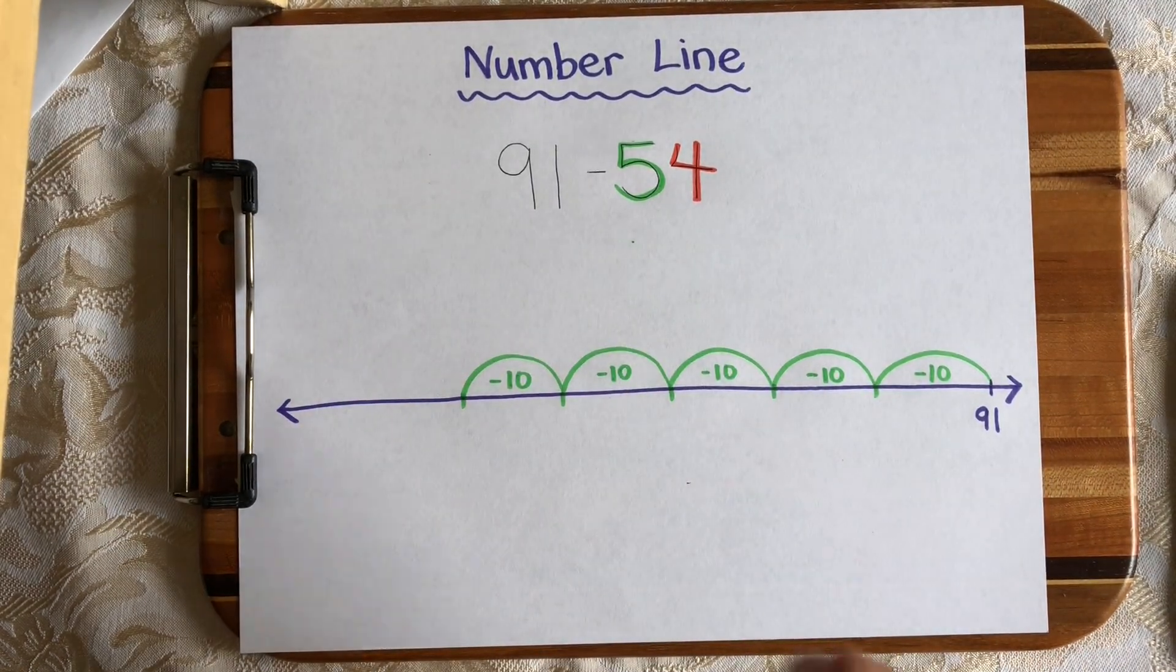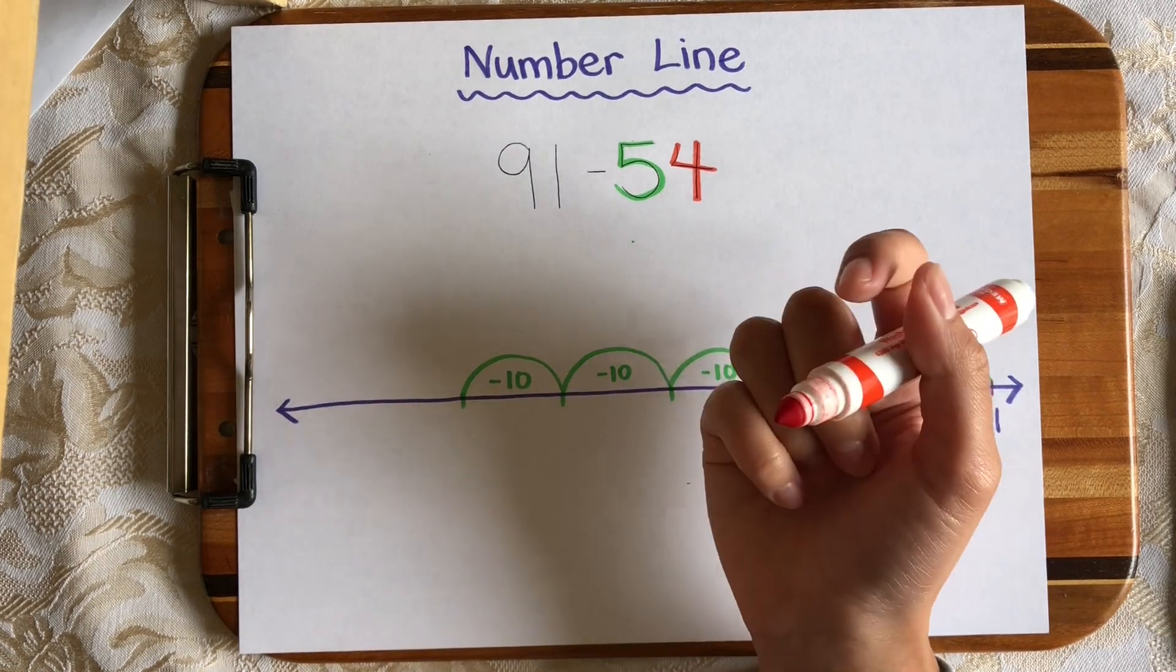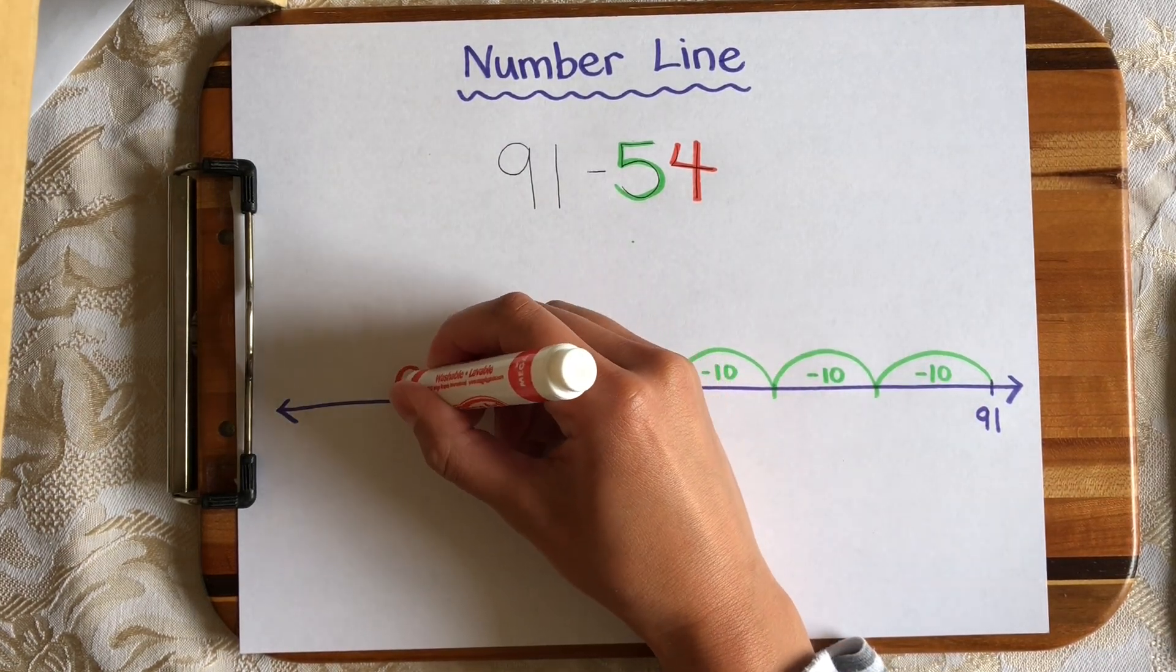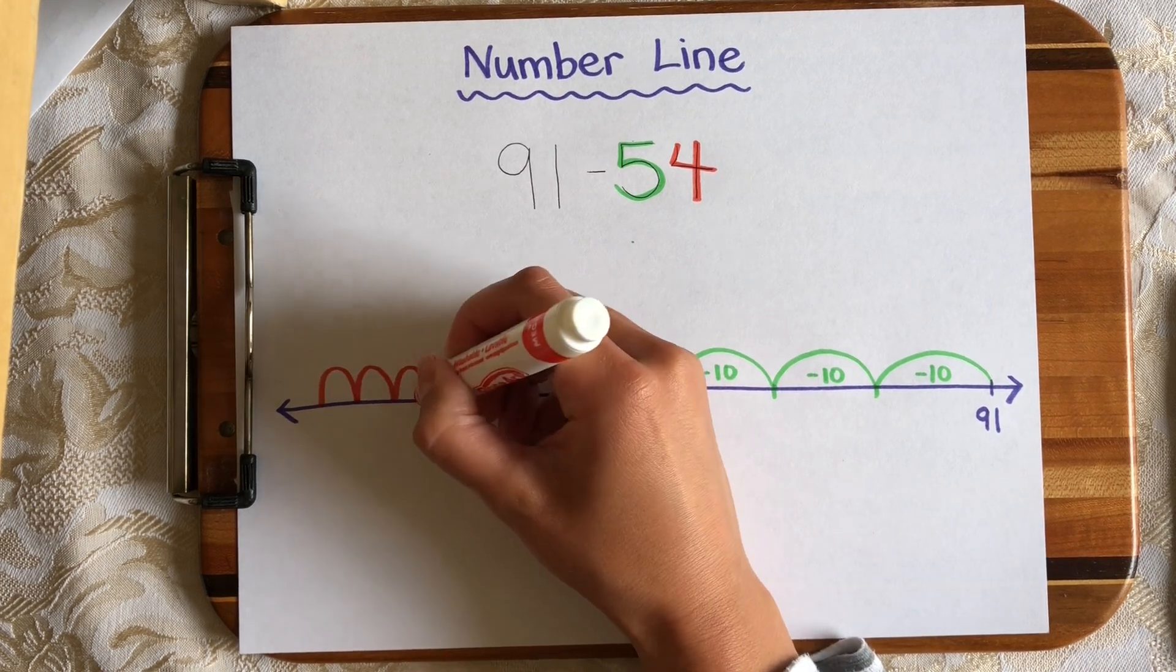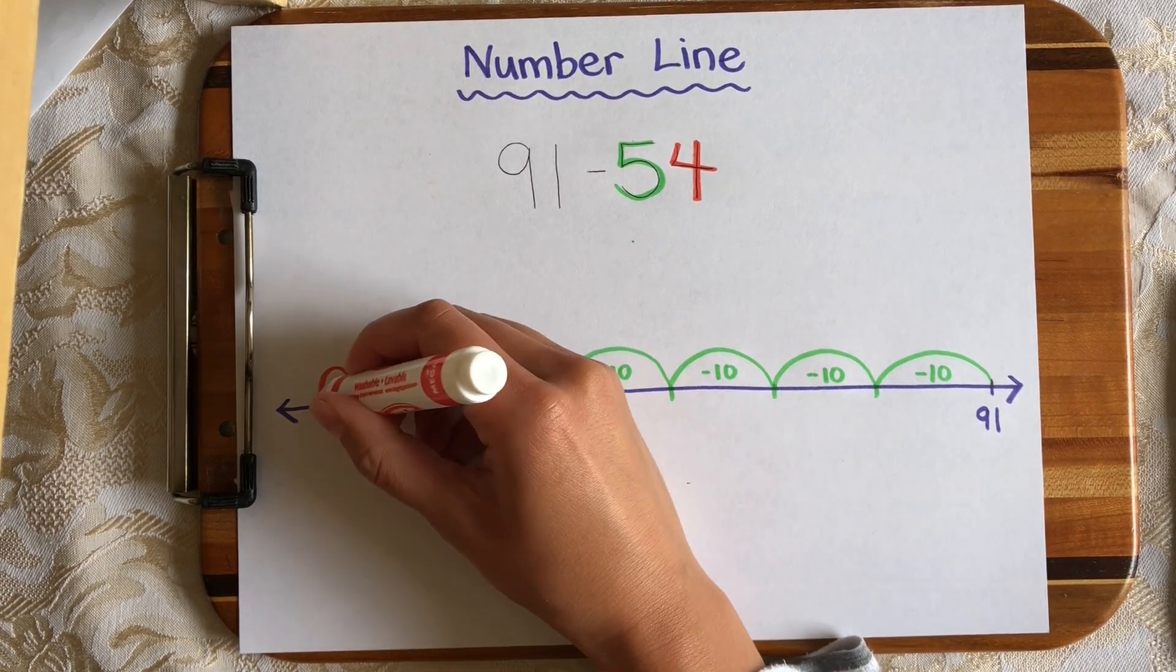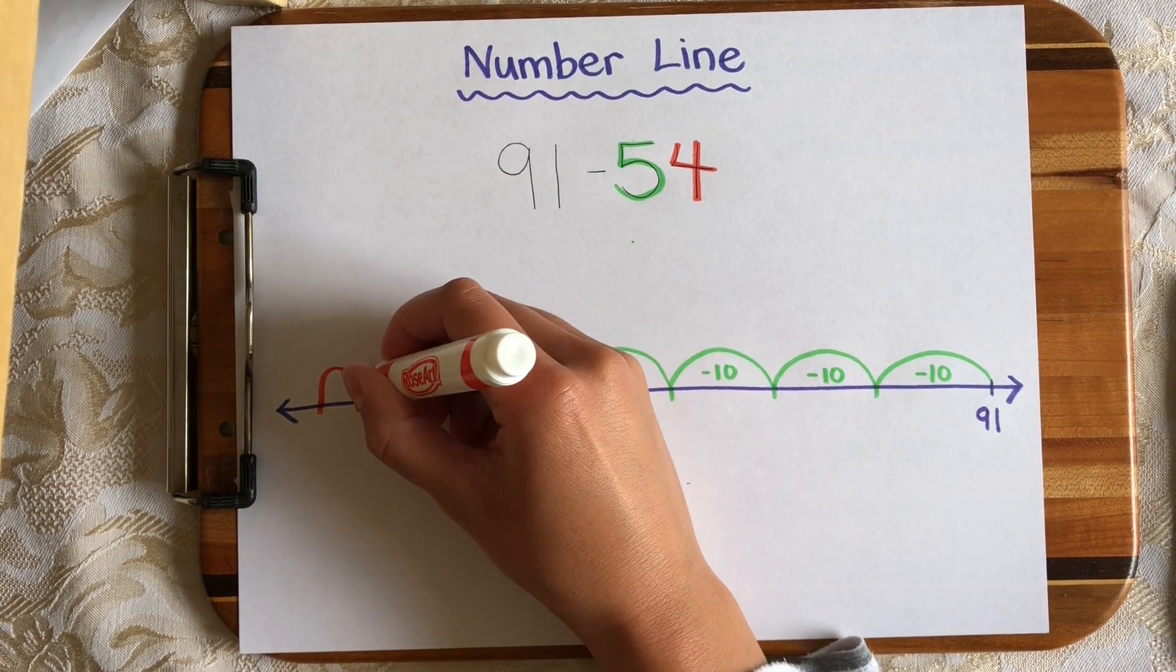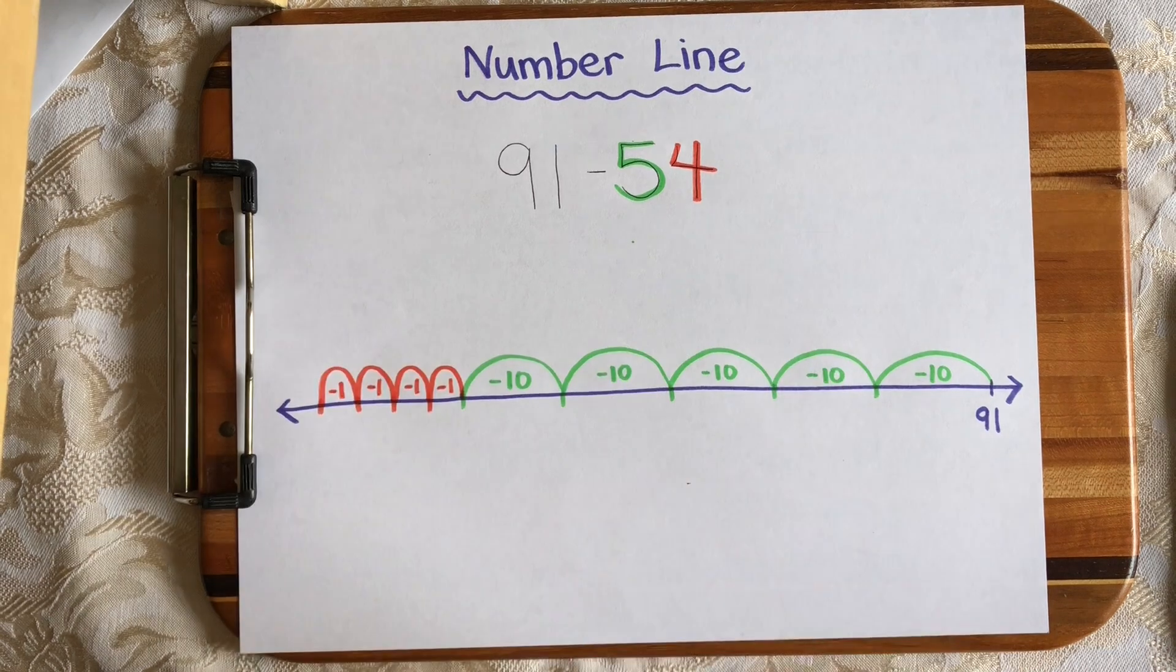Now let's subtract our 4 ones. And these hops are just going to be a little bit smaller to show that they are ones. 1, 2, 3, 4. So just like I labeled my minus 10, I'm going to label these with a minus 1 to show the value of my hops.